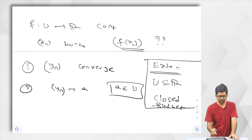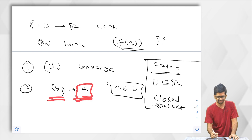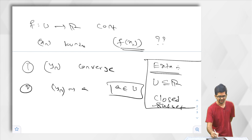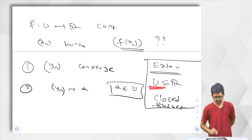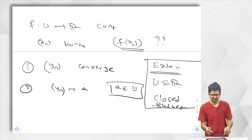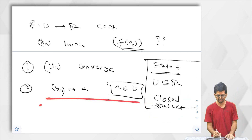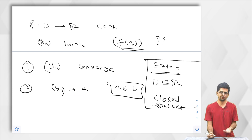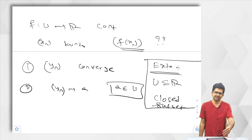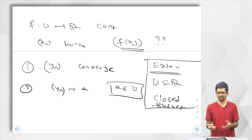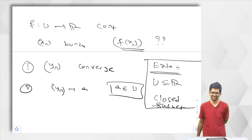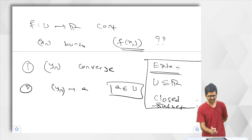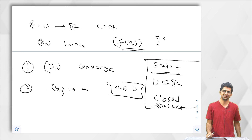A subset U of R is called a closed subset of R if for any sequence in U, if it is convergent, the limit point should be an element of U. We add this extra condition because otherwise we cannot proceed. If I do not know A is an element of U, I cannot apply F and I do not know how to go forward. One thing to do when you get stuck is to go back and see if a small change at the beginning lets you pass the obstacle.